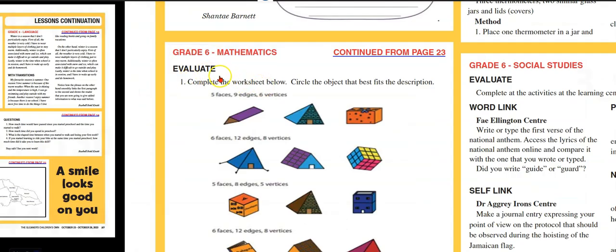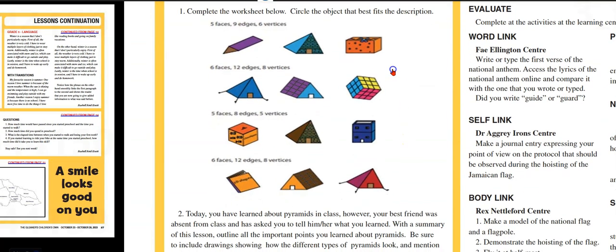Finally, evaluate. This section would like to see you doing this one. Complete the worksheet below. Circle the objects that best fit the description. Faces: five, nine edges, six vertices. So, which of these? For this one, six faces, 12 edges, eight vertices. Which one?